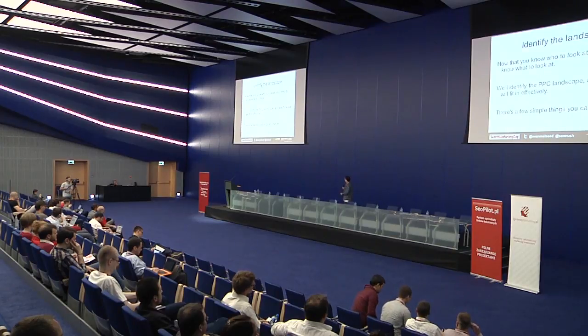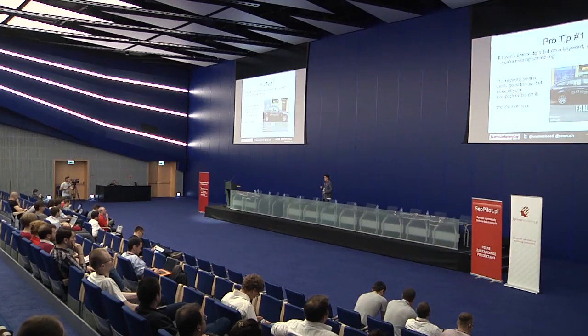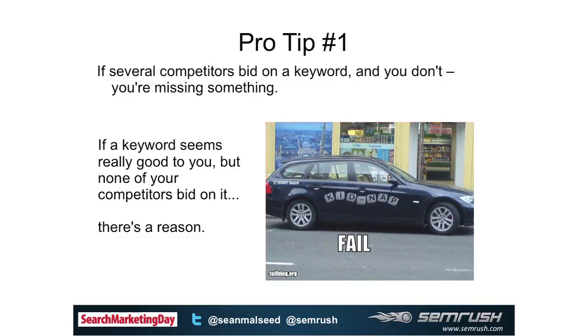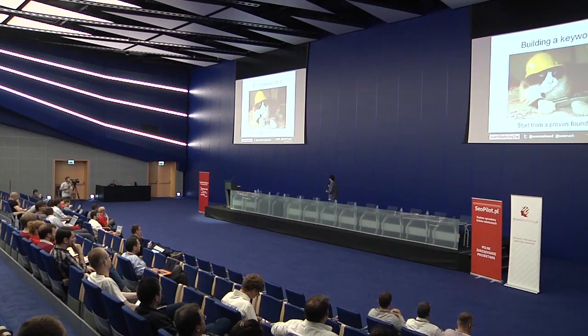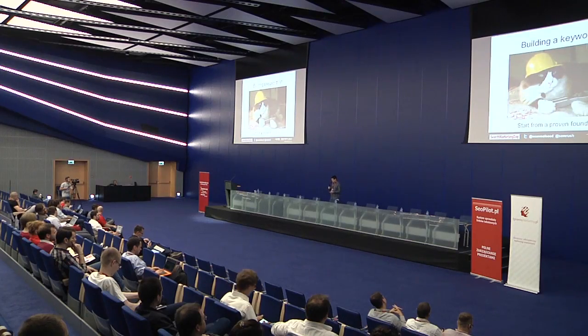Now that we know who to look at, we need to identify the entire landscape of paid advertising and see how we'll fit in effectively. If several competitors are bidding on the same keyword at the same time, most likely that keyword converts - that's a very simple concept. If one person bids on a keyword, they could just be experimenting or making a mistake. If two people bid on it, maybe it's a coincidence. But if three people bid on a keyword, that's not a coincidence - there's something to that keyword. On the flip side, if nobody bids on a keyword you think is great, there's probably something wrong. So to build our keyword list, we're going to start from a proven foundation.